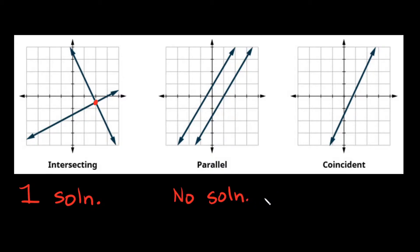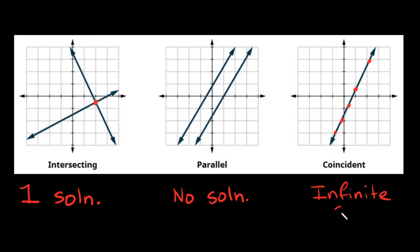The third type that you might see is coincident. Coincident lines are when you have two lines that are the exact same — one literally just sits exactly on top of the other. Since they sit exactly on top of each other, they're touching the entire time at every single point. So coincident lines have an infinite amount of solutions.